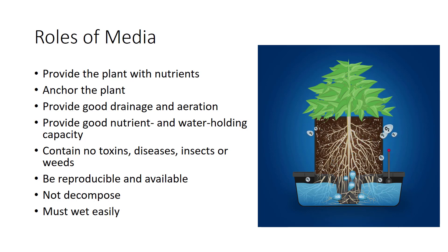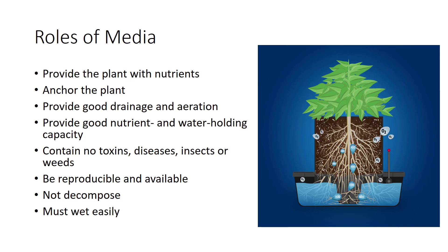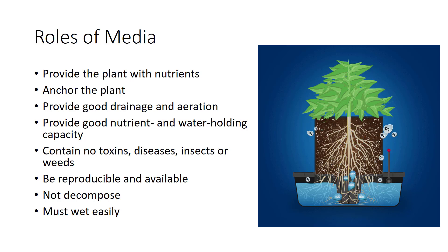All growing media must provide the plant with nutrients, which are the substances that roots absorb with water from the medium — not carbohydrates — anchor the plant to keep it from falling over, provide good drainage and aeration, provide good nutrient and water-holding capacity, contain no natural toxins, diseases, insects, or weeds, be reproducible and available, and not decompose and must wet easily.